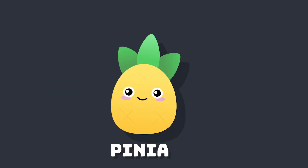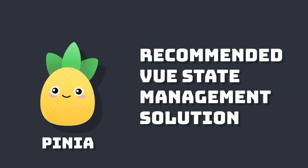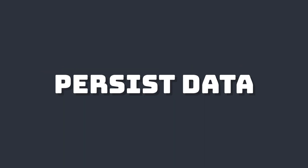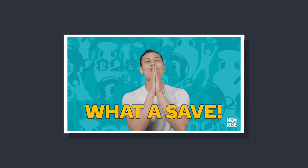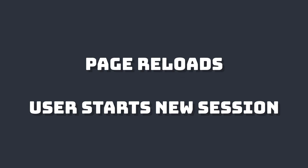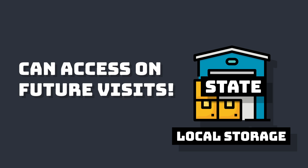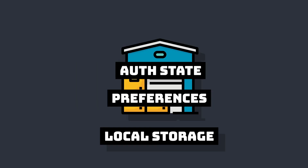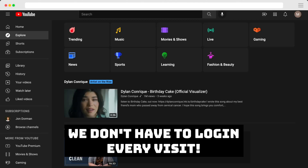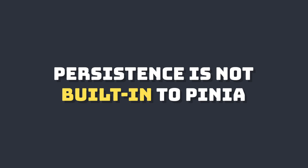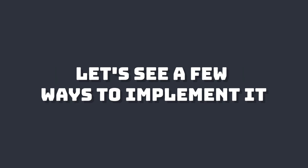Pinia is the new recommended state management solution for Vue 3. A common use case for all data stores is the need to persist data. This gives us a way to save our state, so if our page reloads, a user leaves and comes back, we can store the values of the user's current state and use it later on. Since persistence isn't built into Pinia, in this video we're going to take a look at a few different strategies to implement it.